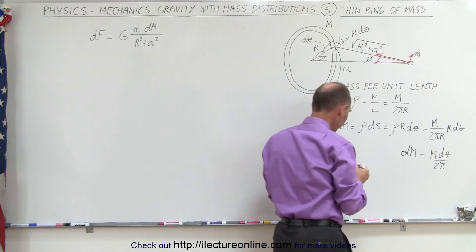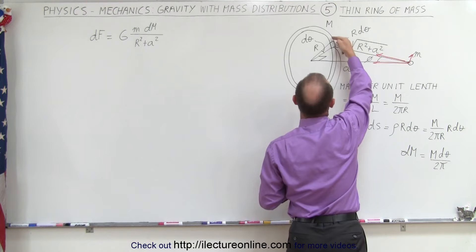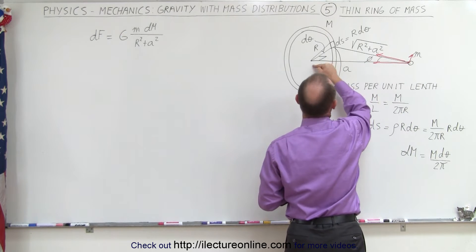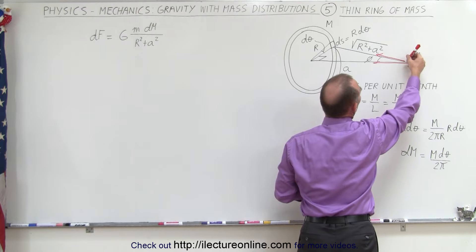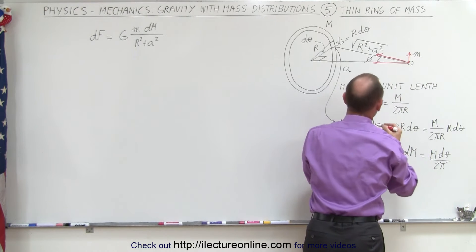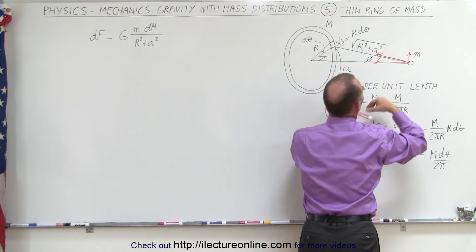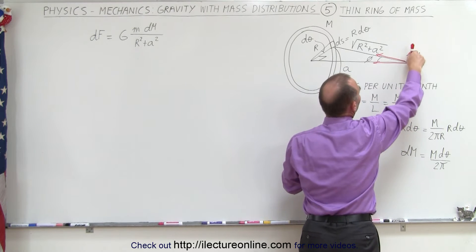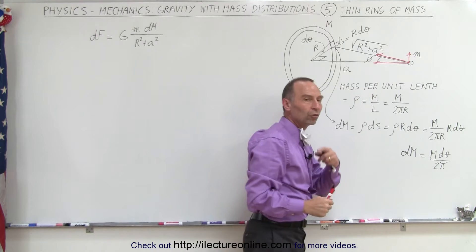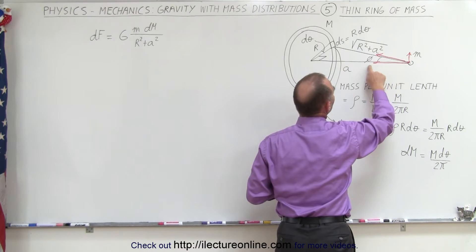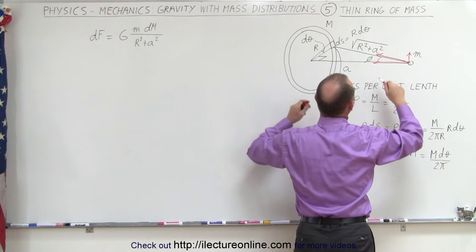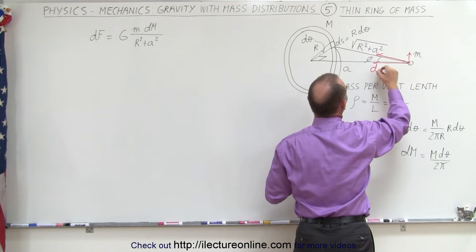This is a 90 degree angle. As we consider little segments around the circle, the perpendicular component rotates around. This axial component will always be pointed directly toward the center of the circle, while the perpendicular component will cancel out as you go all the way around the circle — the components in all transverse directions cancel. The only components we have to keep adding is the axial component. Here we have the angle phi.